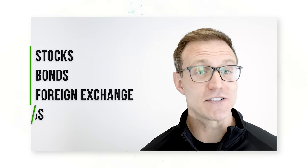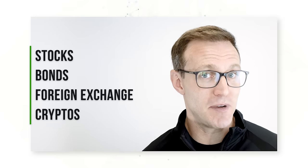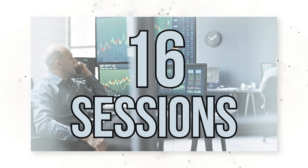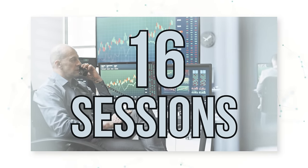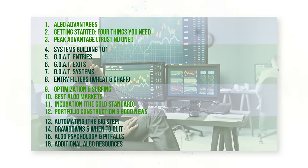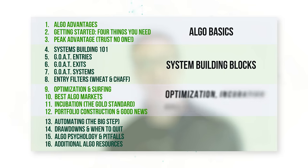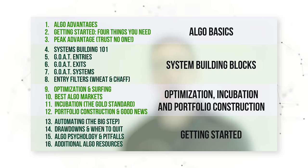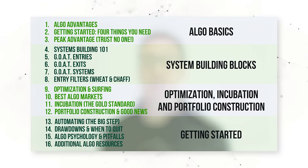You can think of this course as a full university course on algorithmic trading for commodity market futures. All of the concepts that we'll be learning are applicable to any market — that includes stocks, bonds, FX, and cryptos. The algorithmic trading concepts we'll be talking about are universal. This 2023 course comprises 16 different sessions, which focus broadly on algorithmic trading basics, system building blocks, optimization, incubation, and portfolio construction, and finally getting started with live trading.